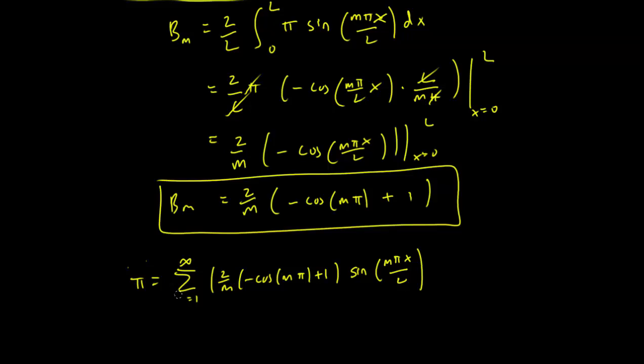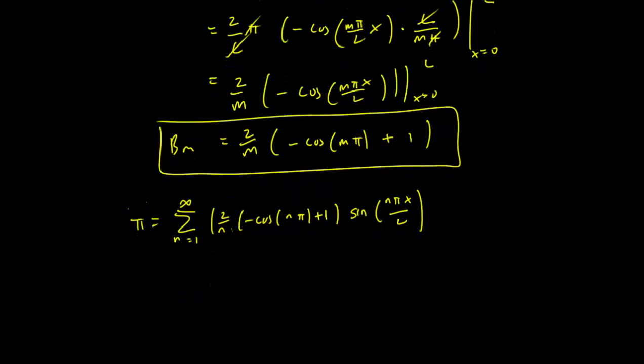Actually, let's just change it back to n since that's what I wrote down in the first place. So let's just replace all the m's with n's, just to make it consistent, it doesn't matter what letter you use. Let's simplify this expression a little bit. It looks a bit nasty. But you can note that cosine of n pi is 1 for n even and cosine of n pi is minus 1 for n odd.